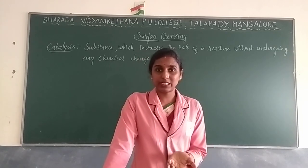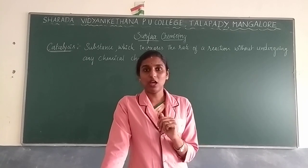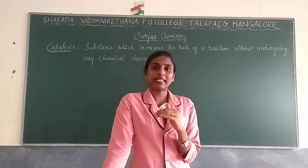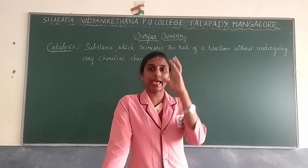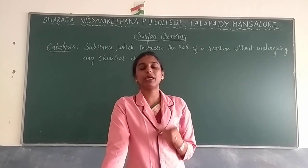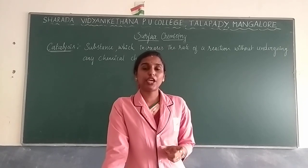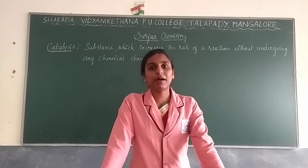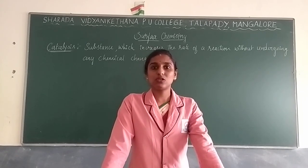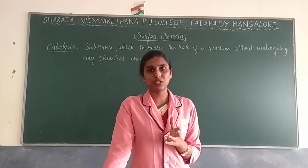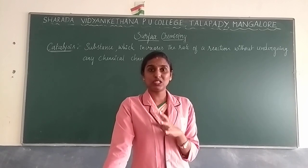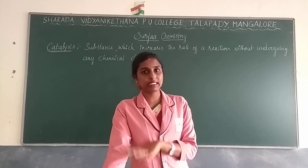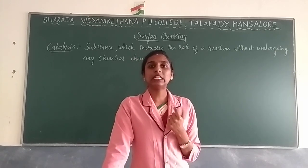Later you learned about Freundlich adsorption isotherm in terms of gas. When you take an adsorbent and gas molecules in a container and apply pressure, you observe the variation in the amount of gas adsorbed per mass of adsorbent. The ratio x/m versus pressure gives the formula x/m = k·p^(1/n), where n is a whole number depending on the adsorbent. Taking logarithm, you can find the slope and values of 1/n and k.